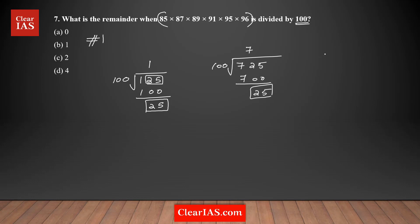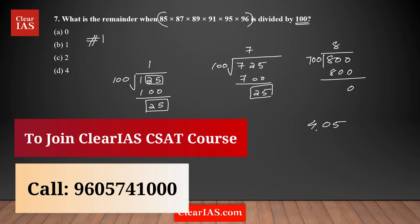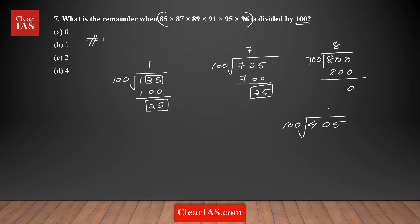Let's say we divide 800 by 100. Eight hundreds are there, so 8 times 100 is 800 — the remainder is 0. Another example: 405 divided by 100. Four hundreds are there, 4 times 100 is 400, so the remainder is 5. You can see a pattern: the last two digits of the number will be the remainder when dividing by 100.